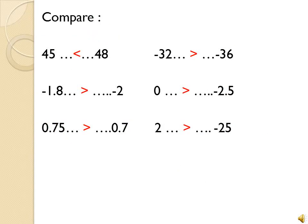Let's do a small application to see if you understand or not. Compare: 45 مع 48 — اتنينتون ما عندهم إشارة, يعني اتنينتون positive, وأكيد الأكبر هو 48 bigger than 45. Next: minus 32 مع minus 36 — نيناتون negative. 36 أكبر من 32 بس لأنهم عندهم minus, فقلبت الحكاية, بحط minus 32 أكبر. Next: minus 1.8 مع minus 2 — نيناتون negative. 2 أكبر من 1.8, بس ثنينتون عندهم minus, فبتصير بالعكس, يعني minus 1.8 أكبر من minus 2.